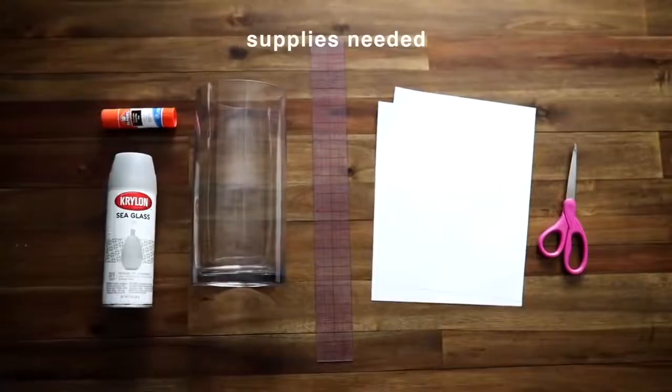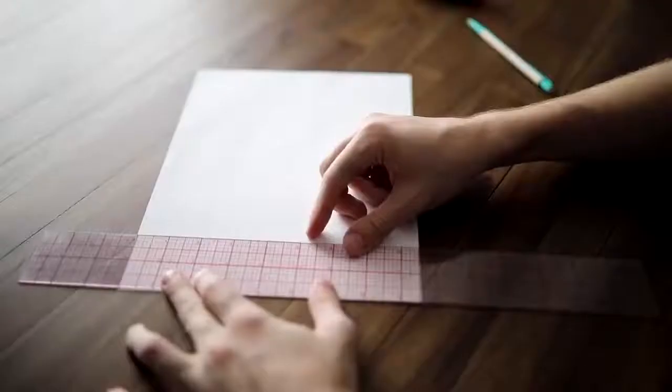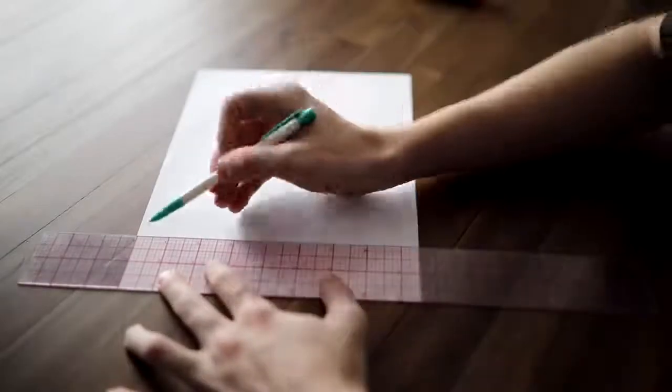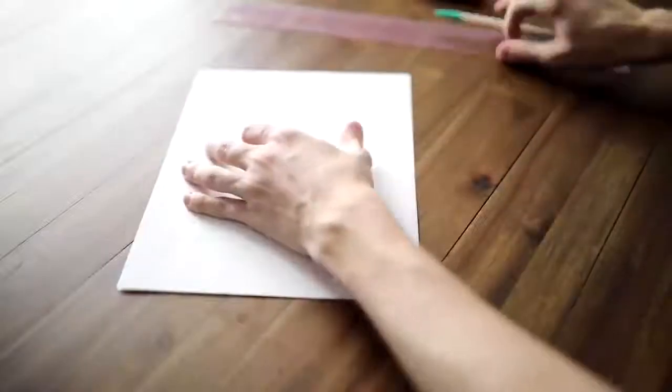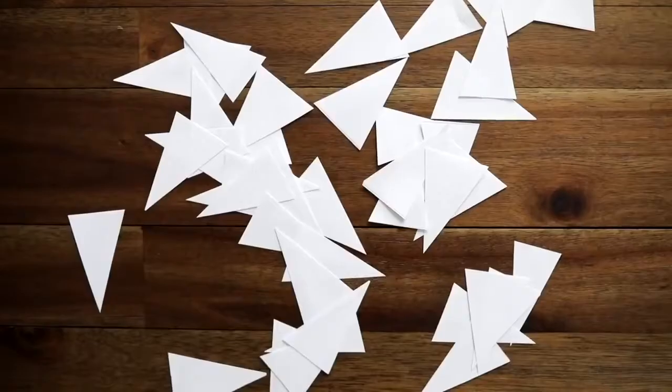DIY number two: all you're going to need is some sea glass spray paint, a glue stick, a vase, ruler, paper, and scissors. I absolutely love the look of this frosted glass vase - I thought it looks so expensive and very West Elm-esque. What I did was cut out two-inch strips from paper and just cut out some triangle masks.